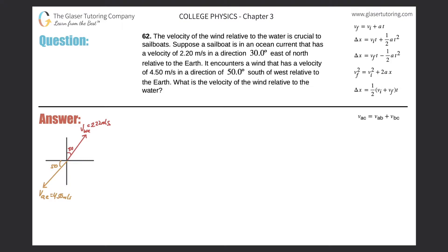Number 62. The velocity of the wind relative to the water is crucial to sailboats. Suppose a sailboat is in an ocean current that has a velocity of 2.2 meters per second in a direction of 30 degrees east of north relative to the earth. It encounters a wind that has a velocity of 4.5 meters per second in a direction of 50 degrees south of west relative to the earth. What is the velocity of the wind relative to the water?